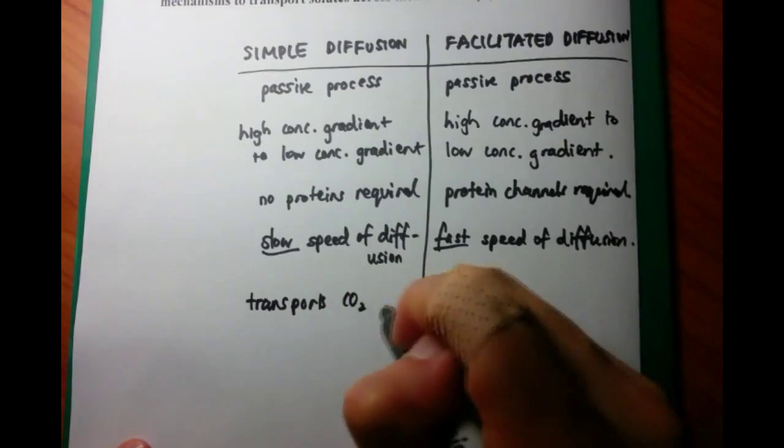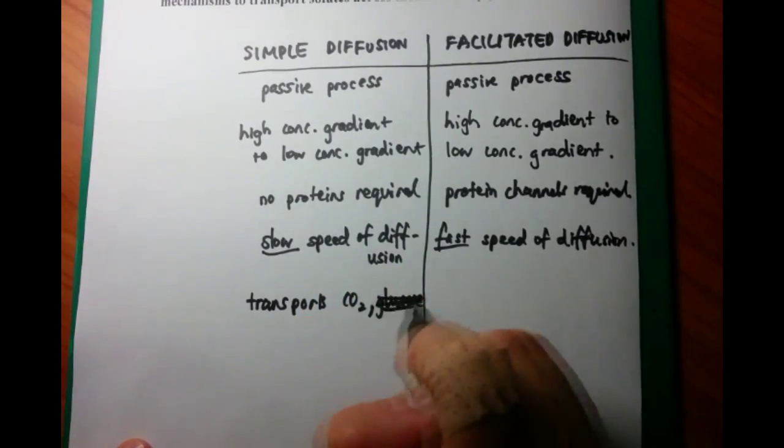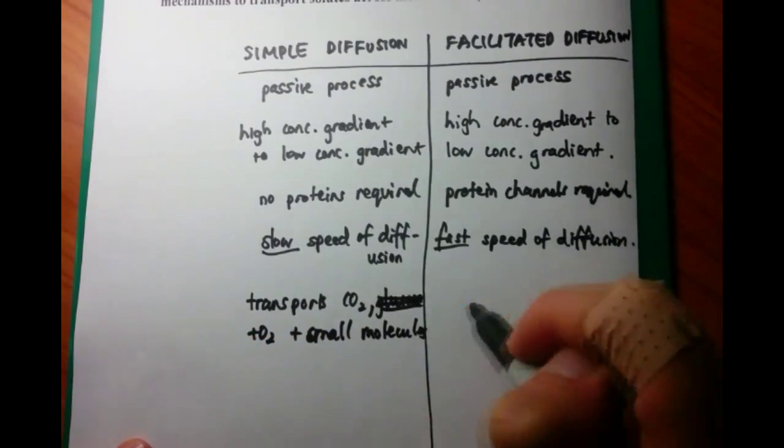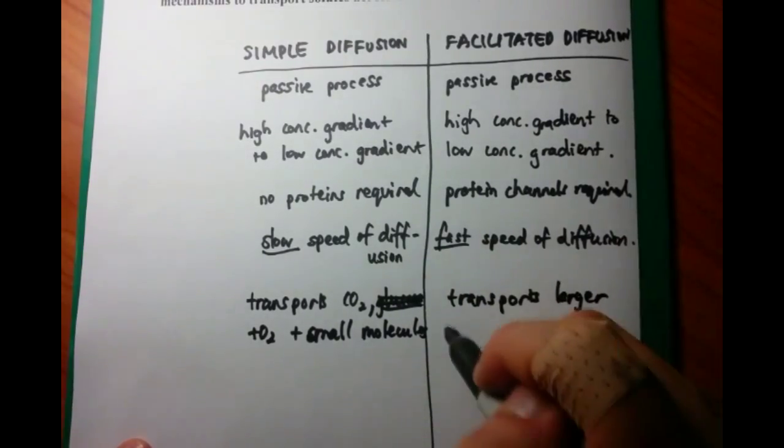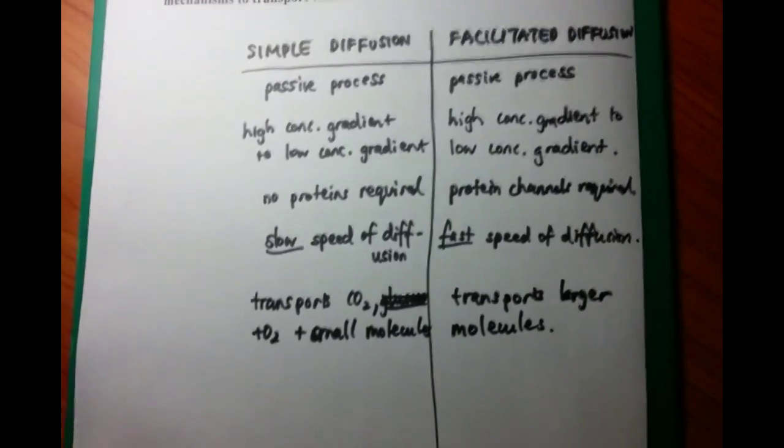Now, simple diffusion is also involved with these particular molecules, such as carbon dioxide, oxygen, and other small molecules, whereas facilitated diffusion actually transports larger molecules. So these larger molecules might be amino acids, it might be glucose, etc.